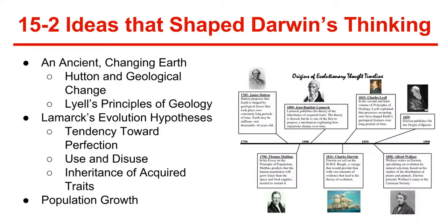15-2: Ideas that shaped Darwin's thinking. First, Earth is ancient and always changing. James Hutton and Charles Lyell helped scientists recognize that Earth is many millions of years old, and that processes that changed Earth in the past are some of the same processes that operate in the present. In 1785, James Hutton proposed that Earth is shaped by geological forces that took place over extremely long periods of time, and that Earth may be millions — not thousands — of years old.